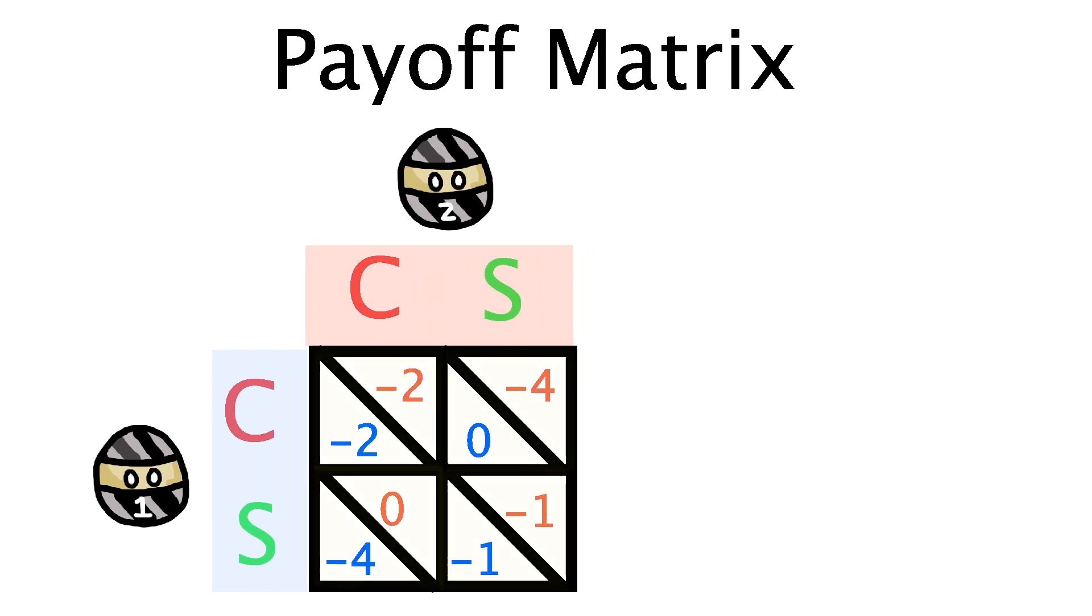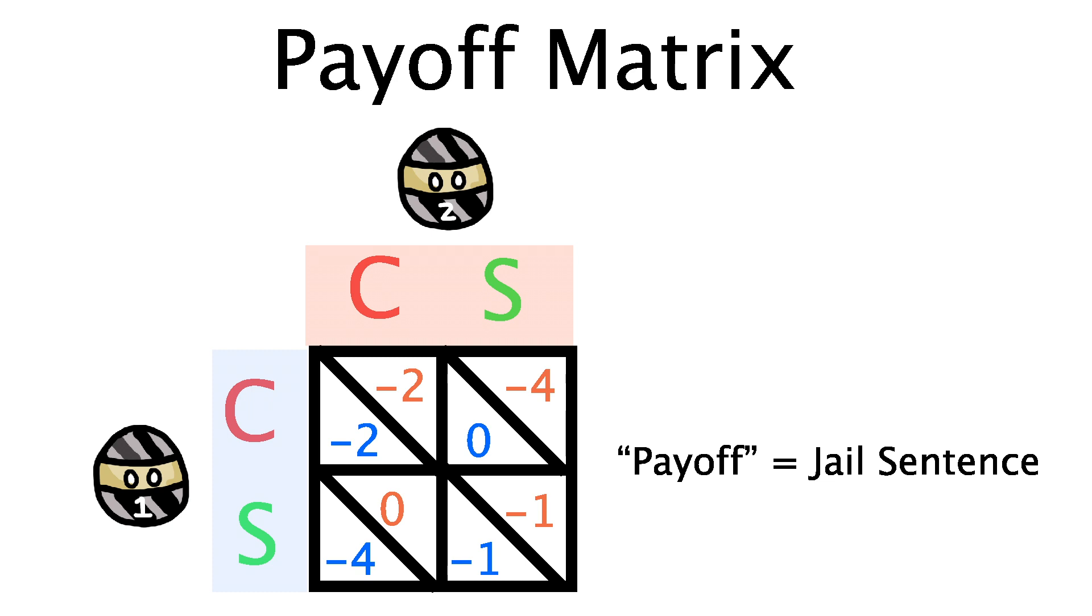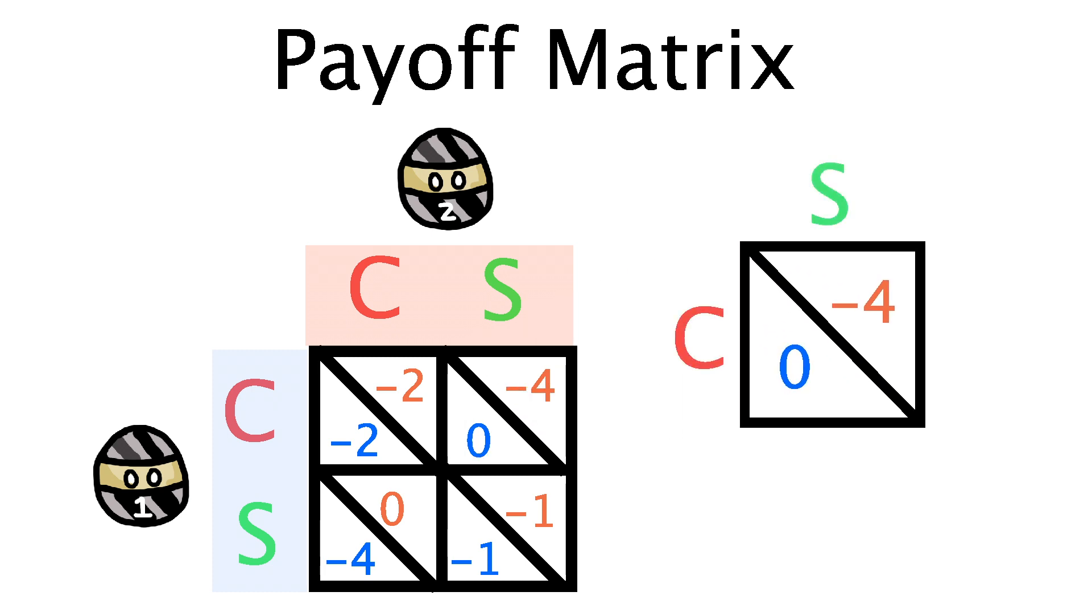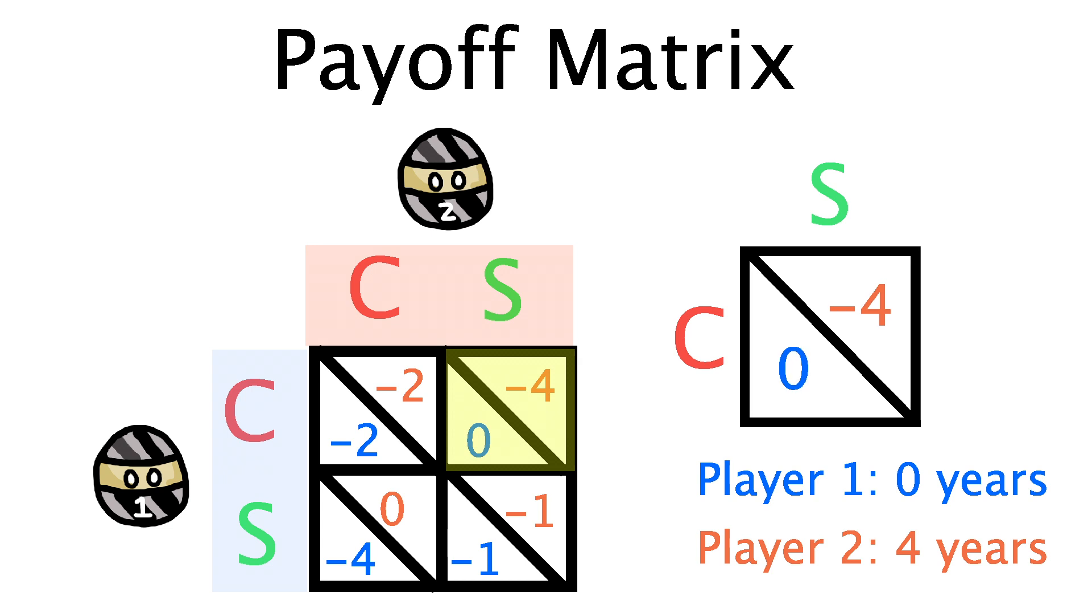The coloured numbers here, known as payoffs, represent the jail sentence each prisoner gets. It's negative because a larger jail sentence is worse for the prisoner. So, for example, when player one confesses and player two stays silent, that's this grid right here, then player one will get no jail time, while player two gets four years in prison.